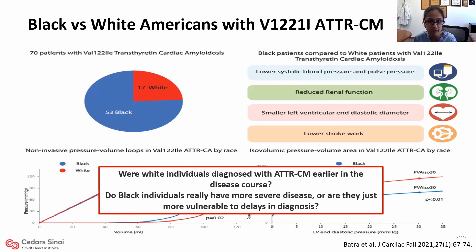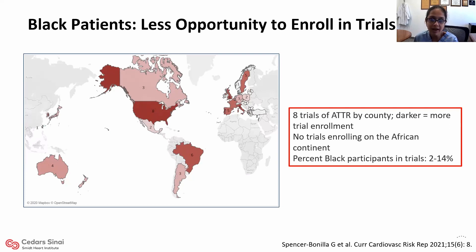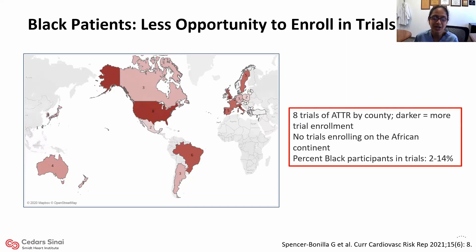There are many other examples of disparities. Looking at where patients are enrolled in clinical trials across eight trials by country — darker red meaning more enrollment — there are no trials enrolling on the African continent, and the percent of Black participants in trials is low, ranging from 2% to 14%. We cannot change what we do not study and document.